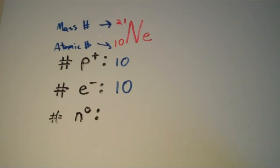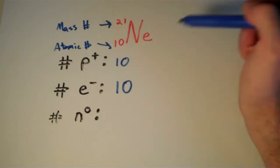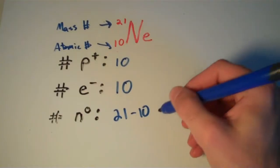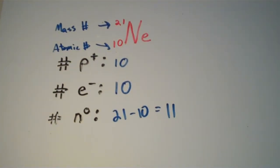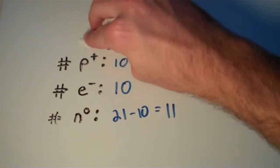And the number of neutrons, well, we obtain that by subtracting the mass number by the atomic number. So, that's just going to be 21 minus 10 or 11 neutrons. Pretty simple. We're going to move on to another one.